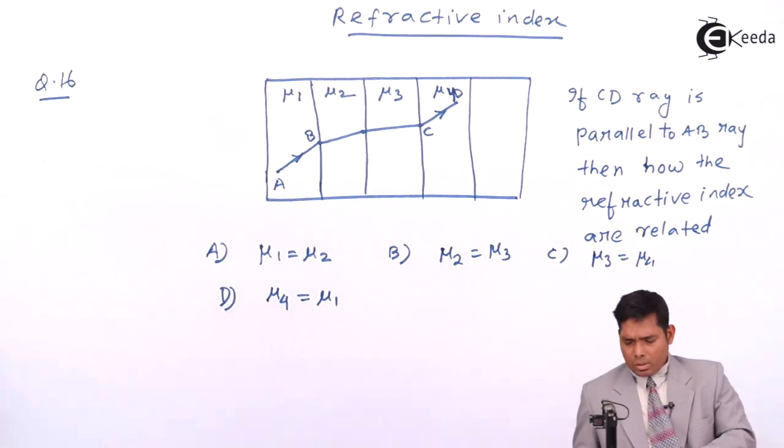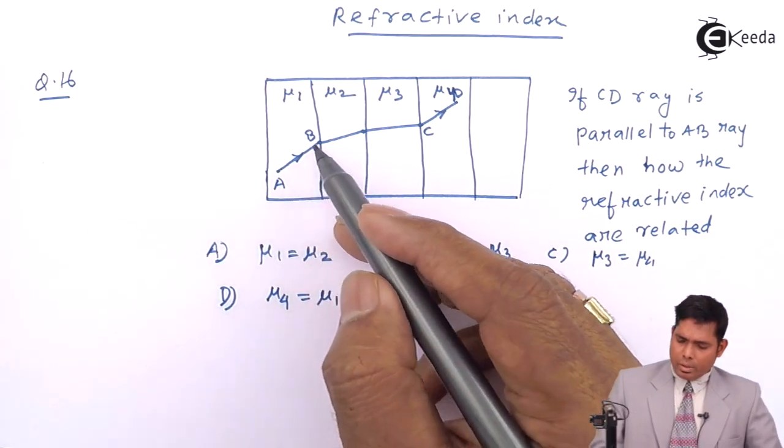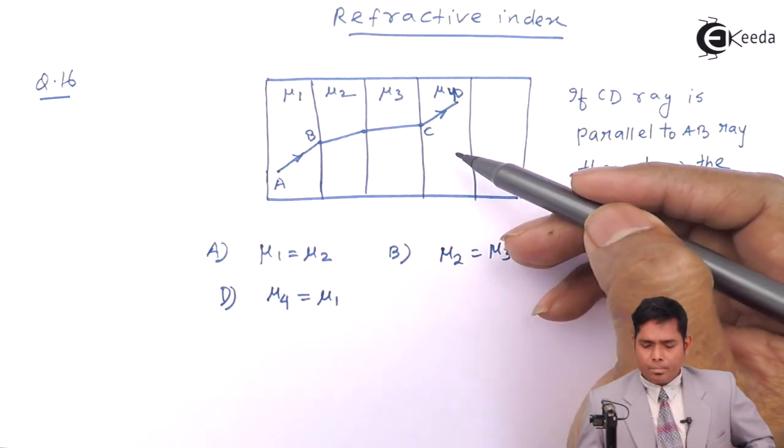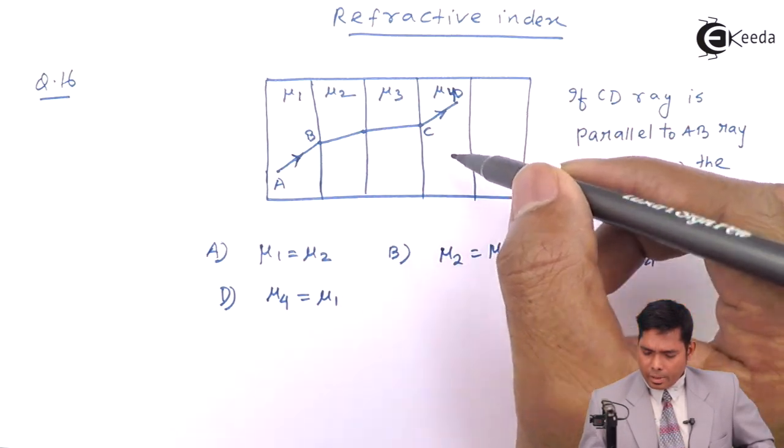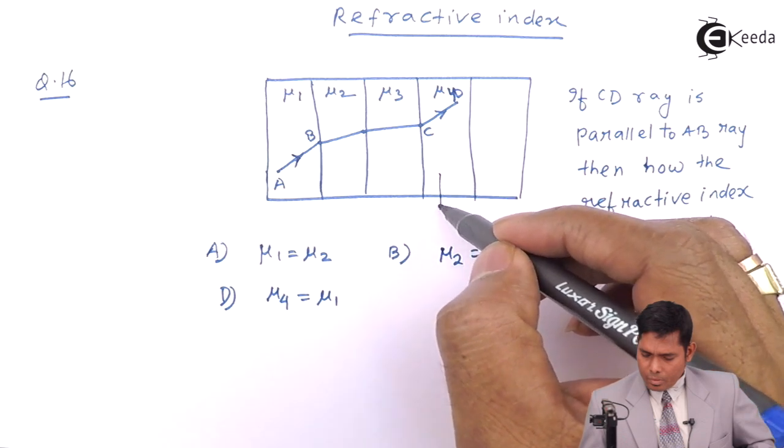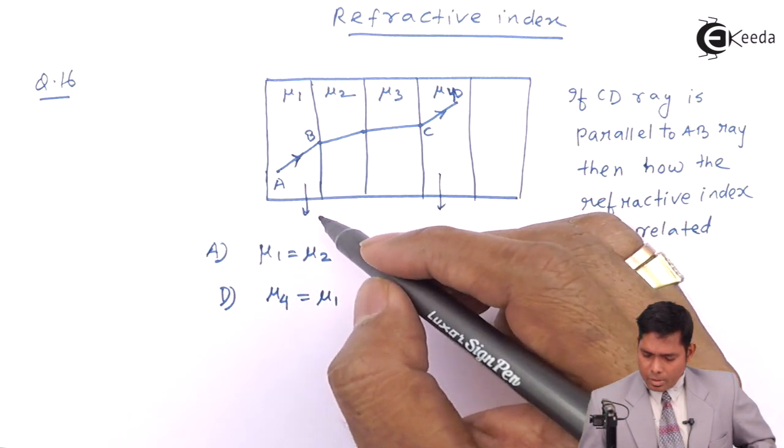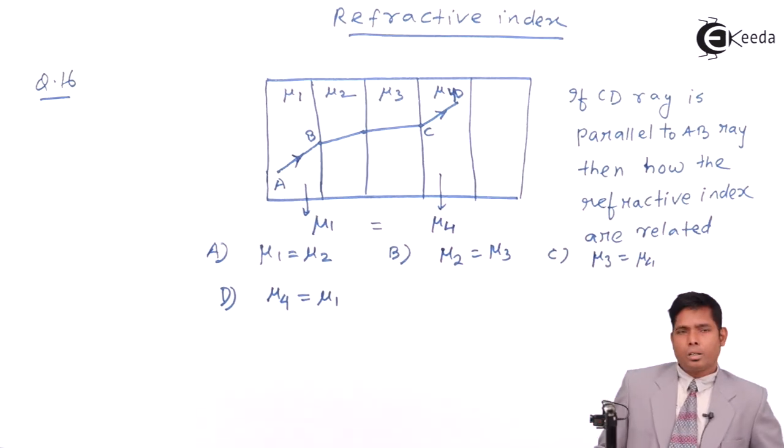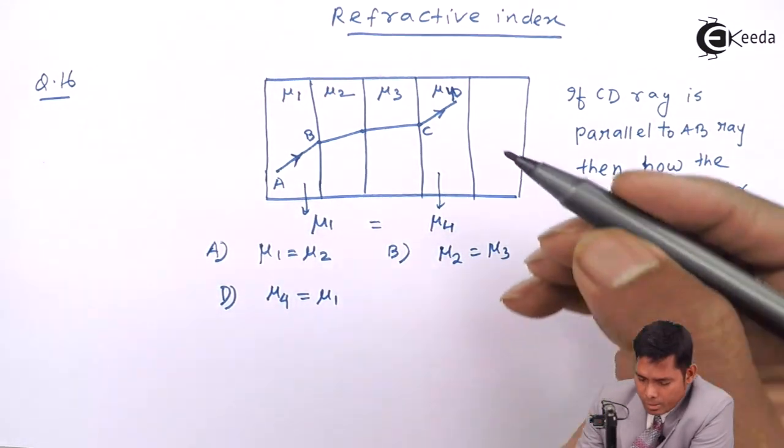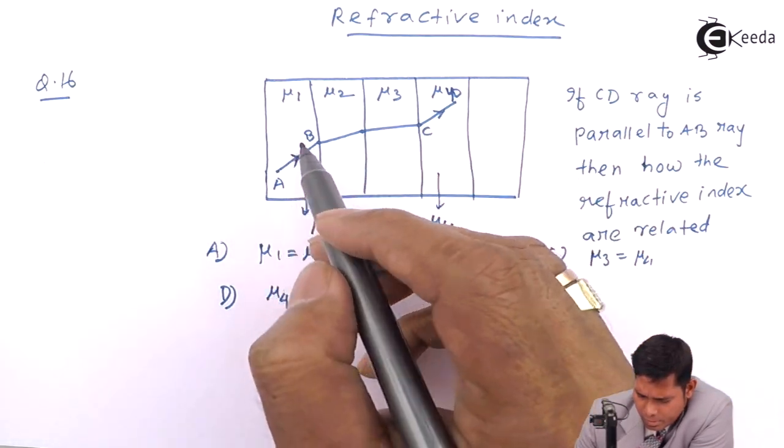So as you can see that the rays are parallel, so these two medium are same. First thing is that if the ray comes out parallel from this side and this side, that means this medium and this medium are same. That means mu1 must be equal to mu4, then only the ray will come out parallel. To solve this, this is the answer to this question.